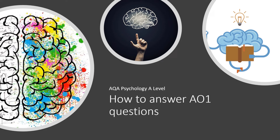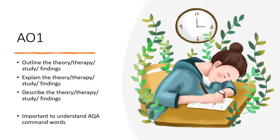Hello all. This video is going to look at how to answer AO1 questions for A-level psychology. So firstly, we've got to understand what the command words are for AO1. I've put a link to the AQA command words list down below. Anytime it says a word like outline, explain, or describe, it's going to be looking for your AO1 knowledge. This could ask you to outline your knowledge of a theory, therapy, a study, or findings. In this video we're going to look at a few key tips for answering AO1 and also a few past pupils' answers so we can see what good AO1 answers really look like.